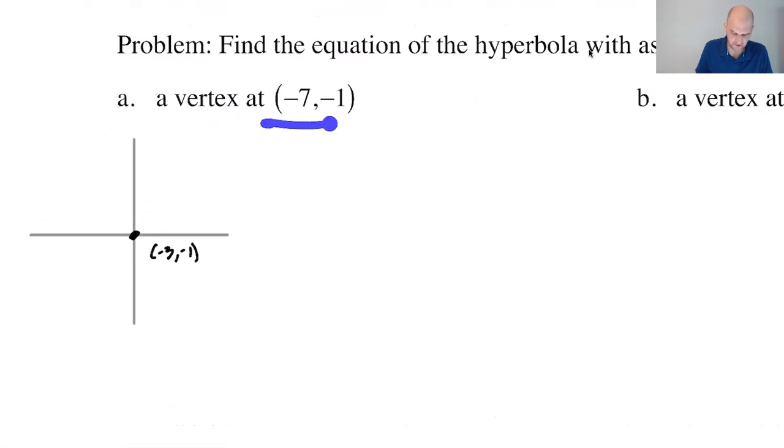So (-3, -1) is where these intersect. And then I'm told in this problem, (-7, -1) is one of the vertices. So here, which means this is a, which means this would be b, which means if that's the vertex, then first of all, it's eating the x-axis.